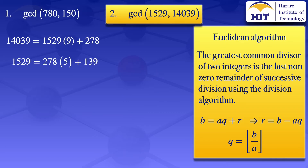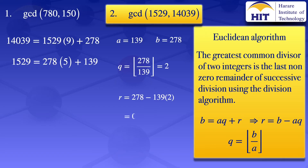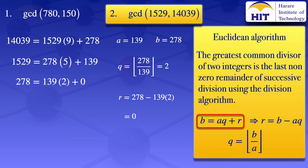We go on and apply the division algorithm again to the numbers 278 and 139. The smaller number will be our A, so A is 139 and B is 278. Our quotient is the floor value of 278 divided by 139, which is 2. The remainder is B minus AQ, giving us 278 minus 139 times 2, which gives us 0. Using the division algorithm, 278 equals 139 times 2 plus 0.